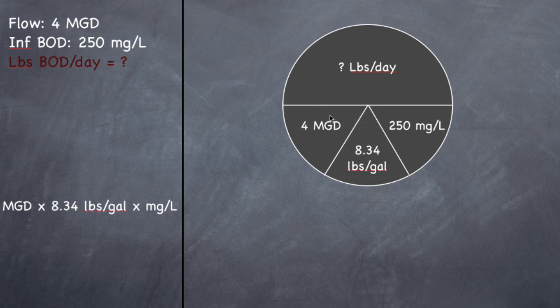So I've put in my flow, 4 MGD, which I got from right here. Put in my concentration, 250 milligrams per liter, which I got from right here. I've got 8.34 pounds per gallon, which is my constant.